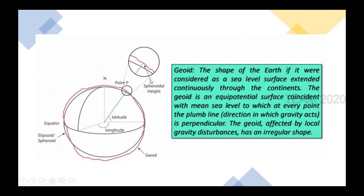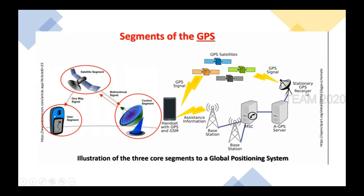The geode is the shape of the Earth as it would appear if considered as a sea-level surface extended continuously through the continents. As discussed in the previous section, global navigation systems consist of three segments: space segment, control segment, and user segment. This is similar to GPS as well. GPS architecture can be classified into these same three segments: space segment, control segment, and user segment.